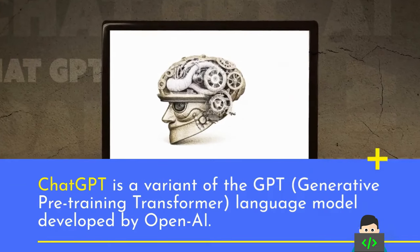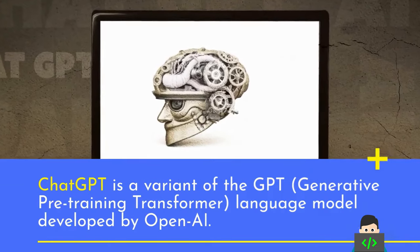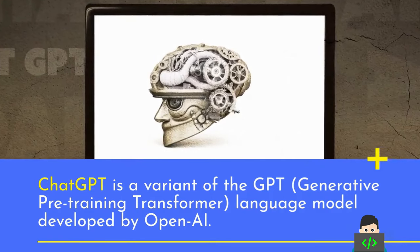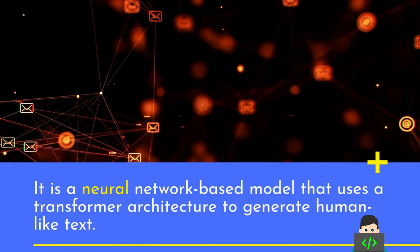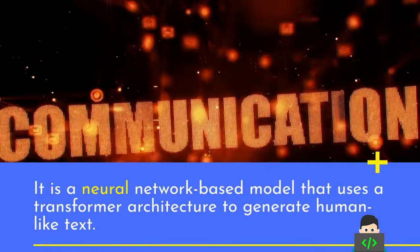ChatGPT is a variant of the GPT language model developed by OpenAI. It is a neural network-based model that uses a transformer architecture to generate human-like text.